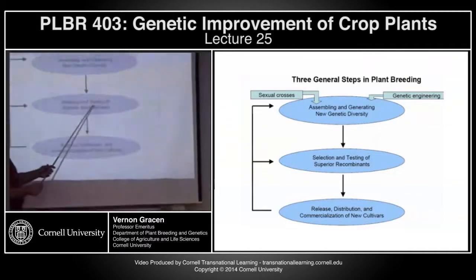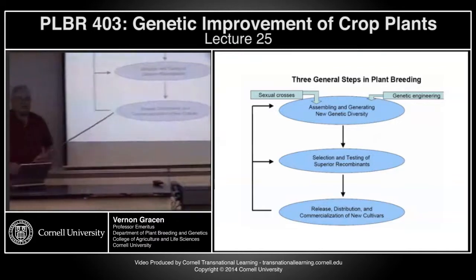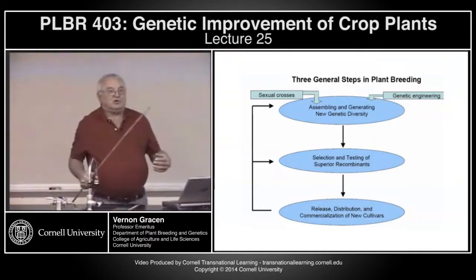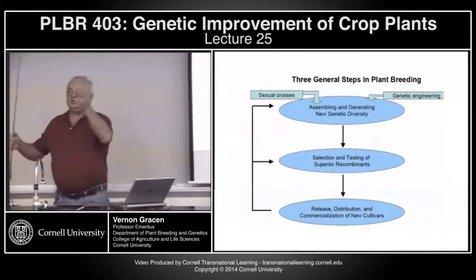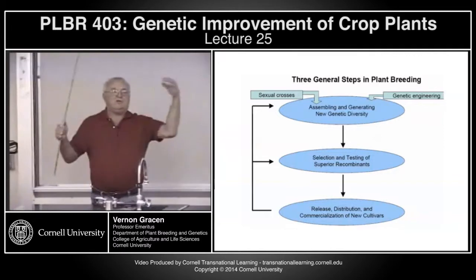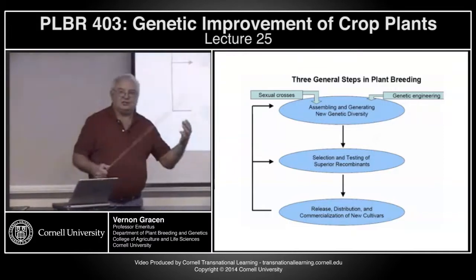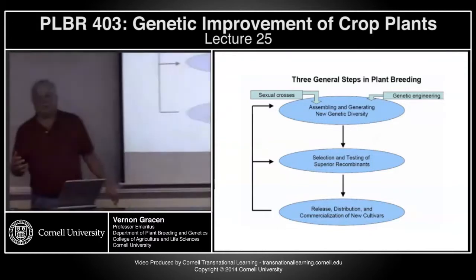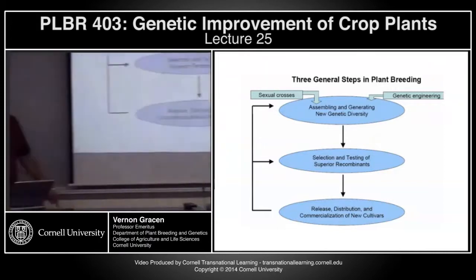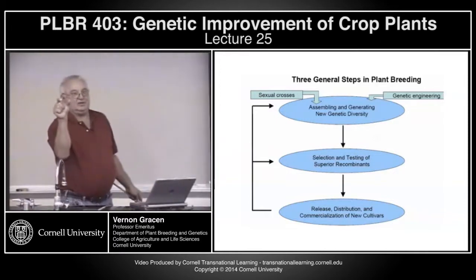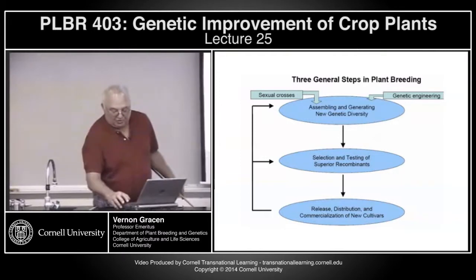When you utilize genetic engineering or plant transformation technologies, we can sometimes speed up the step of generating new diversity. But we haven't yet come up with a way to speed up the process of selection and testing of superior recombinants and release and distribution of new commercial cultivars. We're often told that plant transformation allows us to very precisely add single or a few genes into crop varieties much more rapidly — if you forget about the last six steps of the conventional breeding process, that's true. Overall, the process isn't a lot faster.